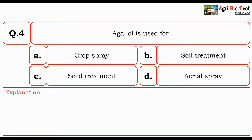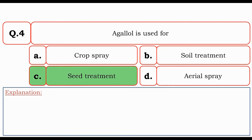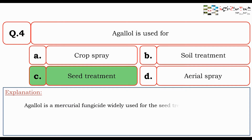Next question: Agalol is used for — crop spray, soil treatment, seed treatment, or aerial spray? The correct answer is seed treatment. Agalol is a mercurial fungicide widely used for seed treatment.